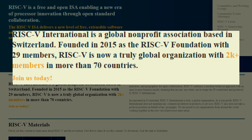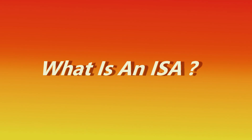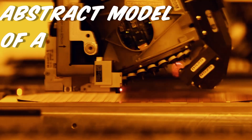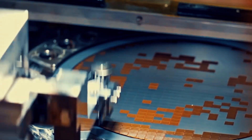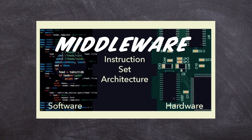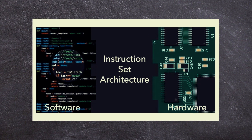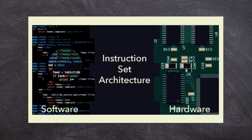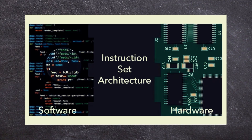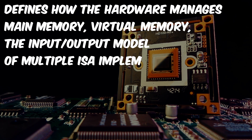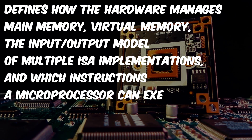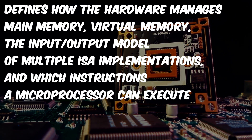Before delving further into things pertaining to RISC-V, it is essential to briefly explain what an instruction set architecture is all about. It is the abstract model of a computer that defines how the CPU is controlled by the software. It basically serves as a middleware or an interface between the hardware and the software, providing the only way through which a user is able to interact with the hardware. It defines how the hardware manages main memory, virtual memory, the input-output model of multiple ISA implementations, and which instructions a microprocessor can execute.